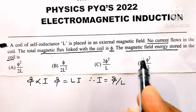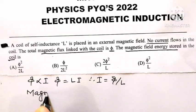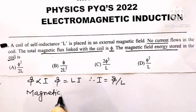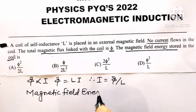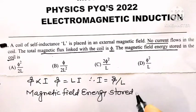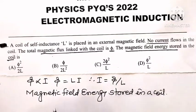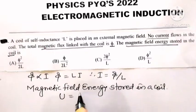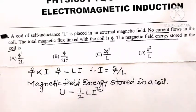Now the magnetic field energy stored in a coil is U equal to half of L into I squared.